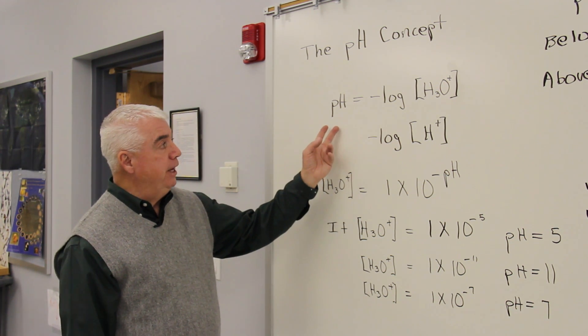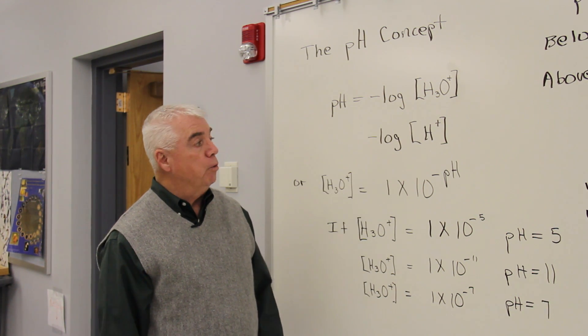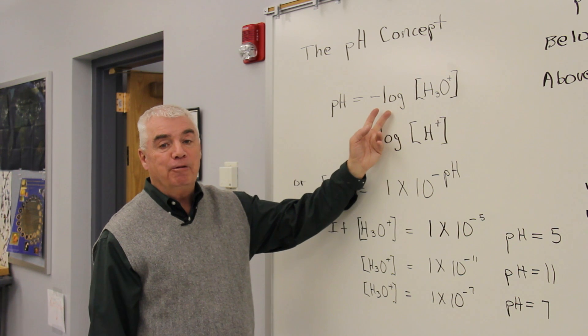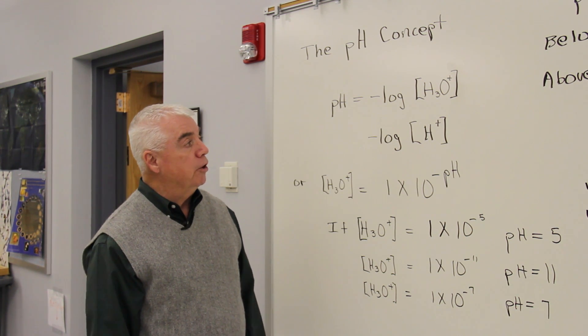There's a formula for pH. pH is equal to negative log of H3O plus concentration. Log stands for logarithm. Some of you are familiar with logarithms and have calculators that can handle those.